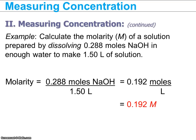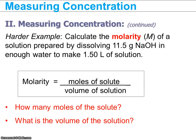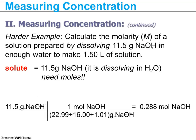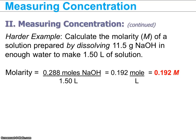A more difficult problem would require the use of grams instead of moles, which means you need to convert from grams to moles using the molar mass. So if instead of moles we were given grams of NaOH, we would identify NaOH as our solute, then use dimensional analysis and the molar mass of sodium hydroxide to calculate the number of moles of NaOH, which we then plug back into the molarity equation as before.